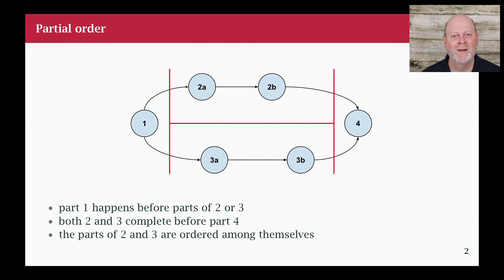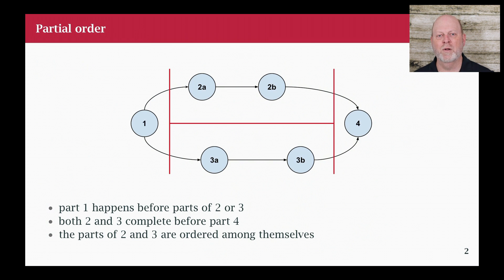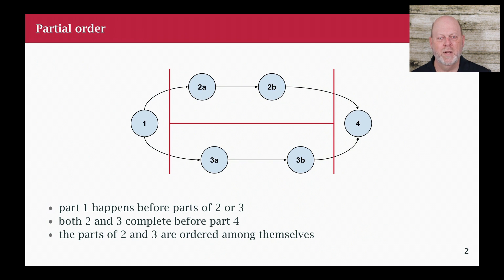The first thing I want to deal with is partial order, which is different from a total order. With unsigned integers there's a total order, because there's an order between any two integers: 2 is less than 3, 2 is less than 5, 3 is less than 7, and so on. In a partial order, some things are ordered and some aren't. Looking at this diagram, 1 has to come before any part of 2 or 3, and 4 has to happen after all of 2 and 3, but there's no relationship between 2a and 3a, or 2a and 3b. That's what I mean by partial order.